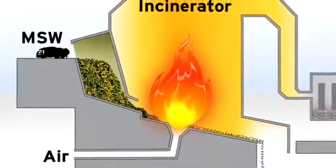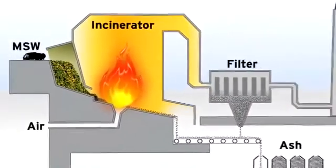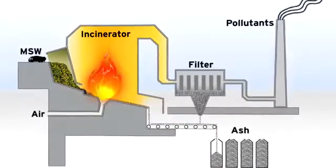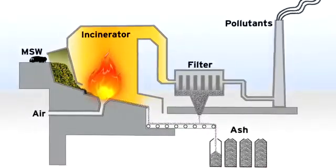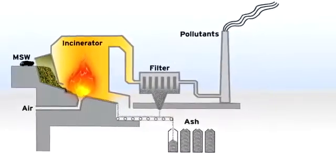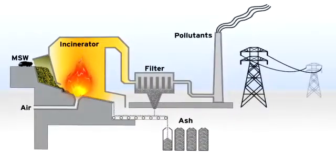Incinerators use large amounts of air to burn municipal solid waste. They produce pollutants that can only be cleaned up after combustion, and they leave behind ash that must be carefully disposed of. The heat generated by incinerators is used to make steam and generate electricity.